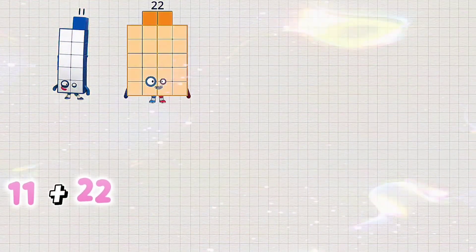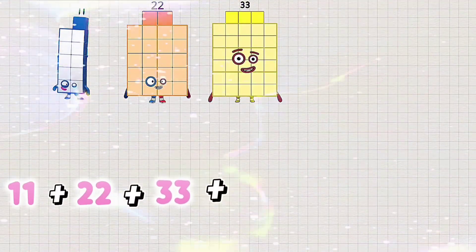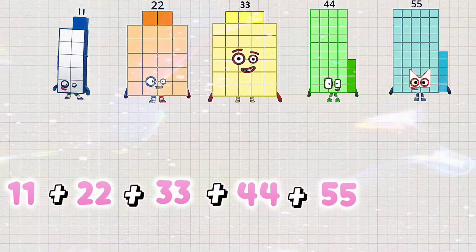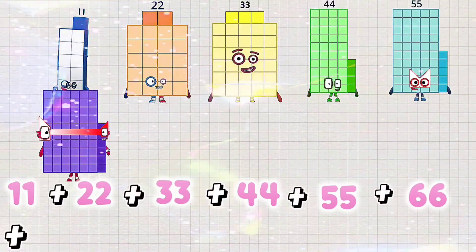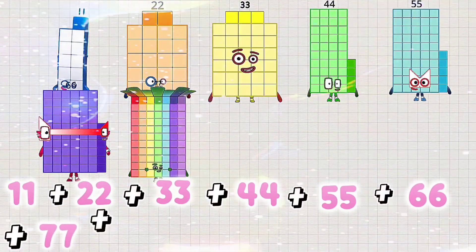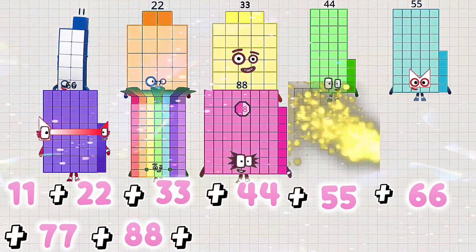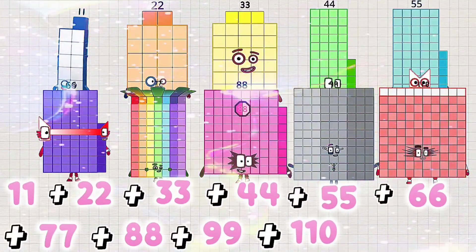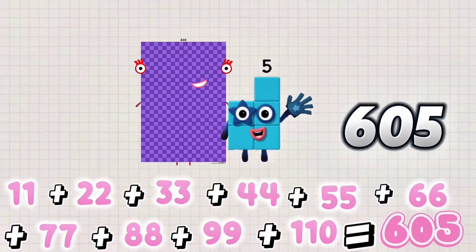11 plus 22 plus 33 plus 44 plus 55 plus 66 plus 77 plus 88 plus 99 plus 110 is equals to 605.